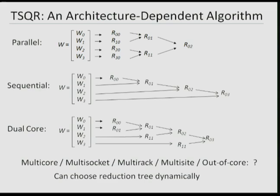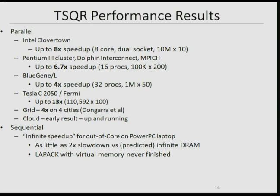Here are a few speed-up numbers: 8x compared to the previous best on Clovertown, 6.7x on a Pentium cluster, 4x on Blue Gene, 13x on a Fermi GPU, 4x on a grid of four French cities (where inter-city data movement is very slow), and we have it running on a cloud. In the sequential case we got effectively infinite speed-up: the conventional algorithm thrashes the disk so long we gave up waiting, but the new algorithm runs only twice as slow as if you had an infinite DRAM.